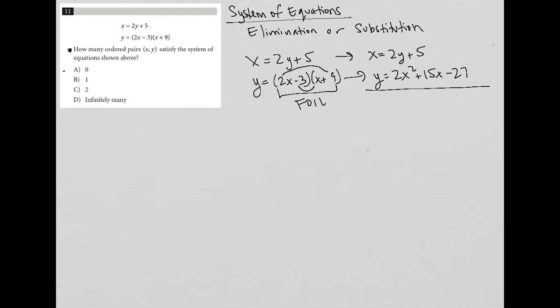If there are no solutions, that means there isn't an (x, y) pair that makes this system work. If there's one, then there's only one (x, y) pair. If there's two, then there's two (x, y) pairs and infinitely many, really infinitely many.